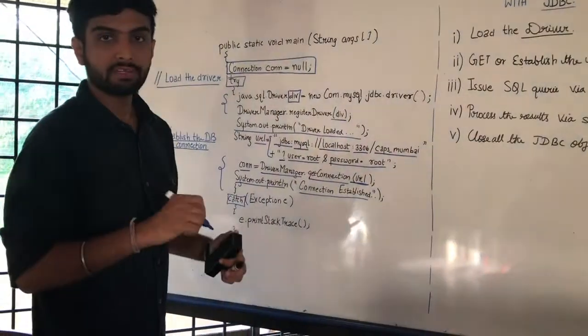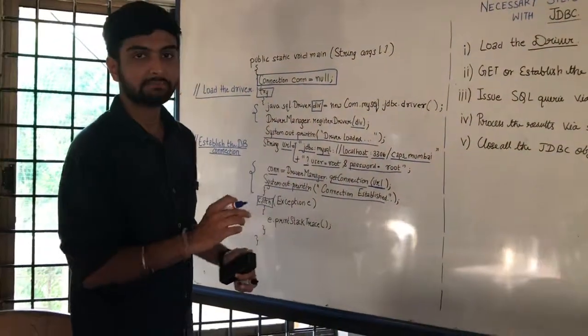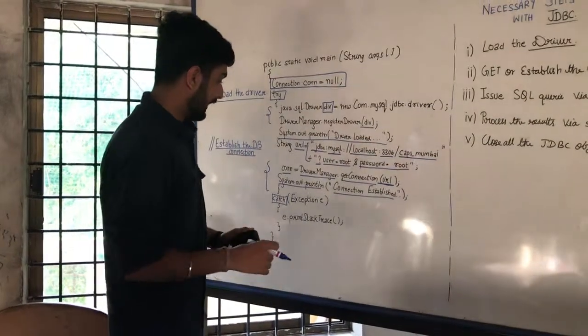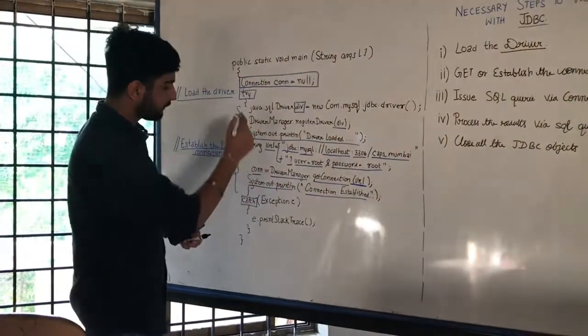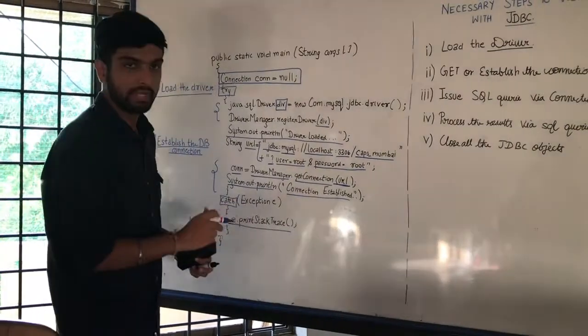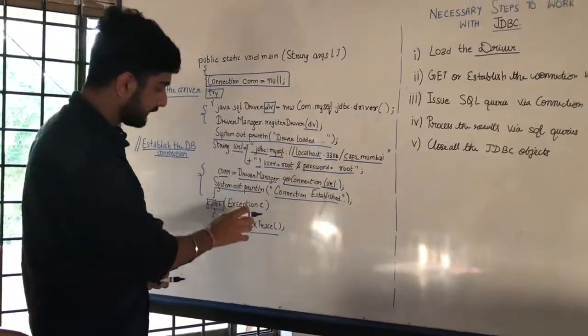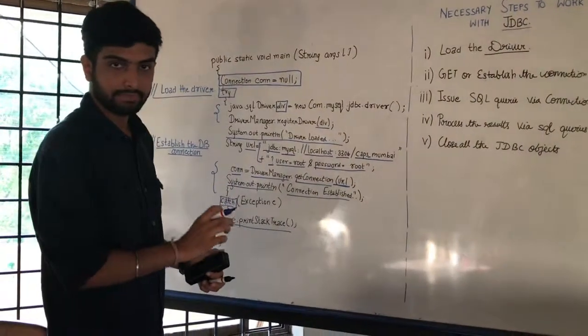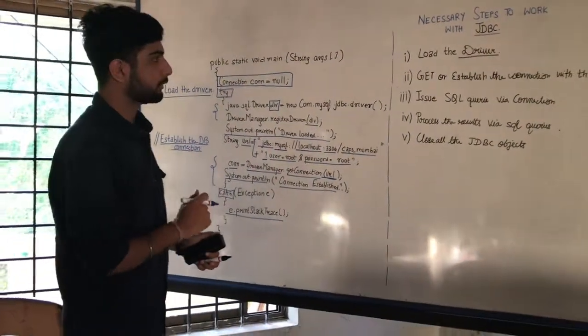So that to cross verify in the output that whether the connection has been established or not. And, following which if we have a try block, we will write the catch block with the e.printStackTrace. So that, if we come across any kind of exception, this will give the name, address and the message of the exception that we have come across.